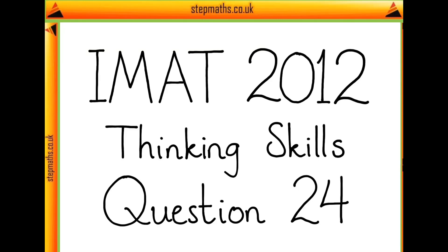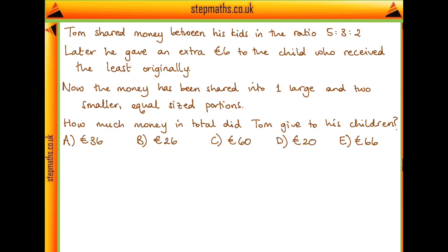In this video I'm going to go through question 24 on the 2012 iMac paper. For this question, we're told that Tom shared some money between his three children in the ratio of 5 to 3 to 2. Then later he gave an extra 6 euros to the third child who received the least money originally, and this meant that the money had been split into one large share and two smaller shares of equal size. We want to know how much money in total did Tom give to his three children.